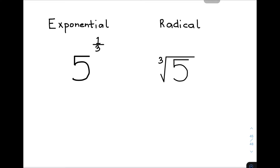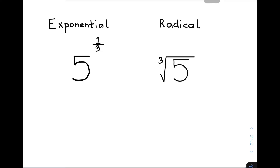Before we start converting expressions with rational exponents to radical expressions and vice versa, let's have a review first about these two forms. We have here an exponential form and a radical form. This is an exponential form wherein it is an expression with rational exponent. When we say rational exponent, these are exponents in fractional form like this one — we have one third. So for the exponential form, this number, this five, is considered as your base. And this number on the upper right side of your base is your exponent or fractional exponent.